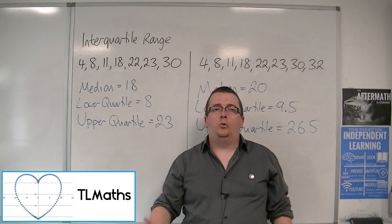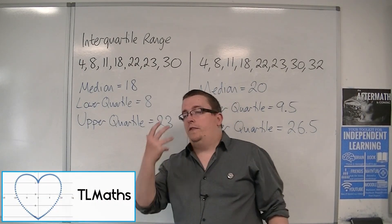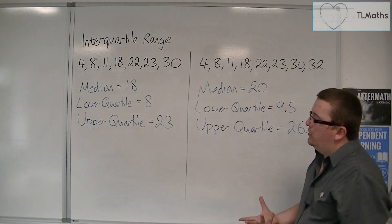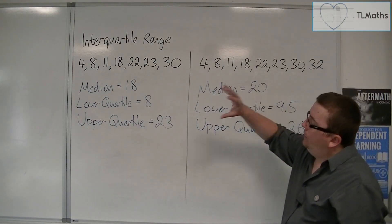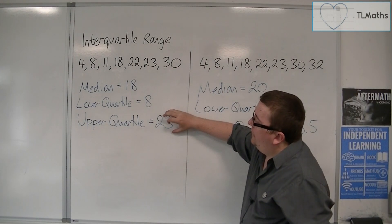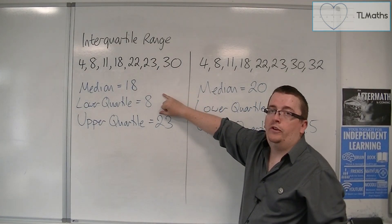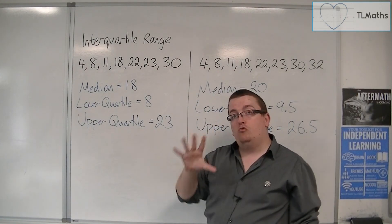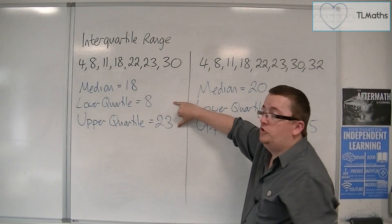So what do we mean by the interquartile range? Well, the interquartile range is calculated by getting your upper quartile and subtracting the lower quartile. It's effectively finding the range between those two quartiles.